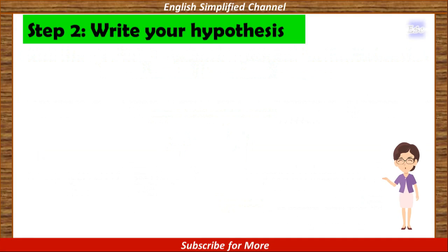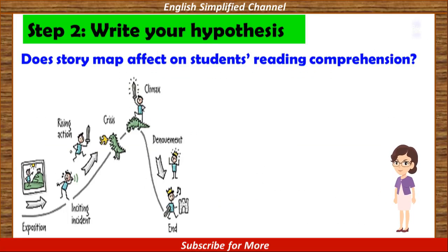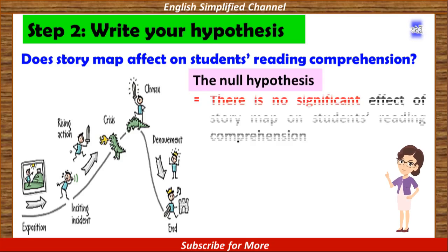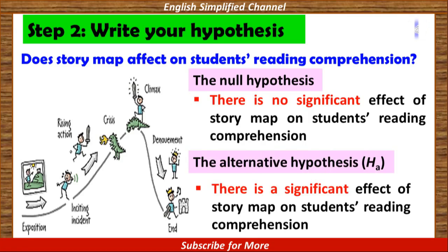For example, back to the research question: Does story map affect students' reading comprehension? The null hypothesis is: There is no significant effect of story map on students' reading comprehension. While the alternative hypothesis is: There is a significant effect of story map on students' reading comprehension.